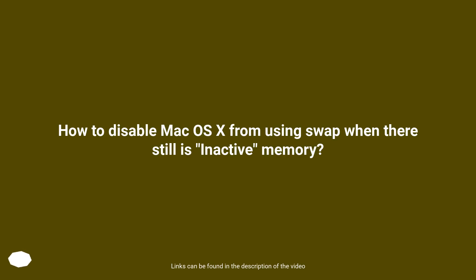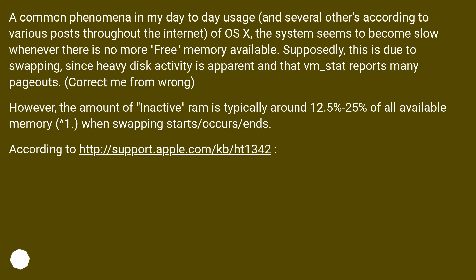How to disable Mac OS X from using swap when there still is inactive memory? A common phenomenon in day-to-day usage, and reported by several others across the internet, is that OS X seems to become slow whenever there is no more free memory available. This appears to be due to swapping, since heavy disk activity is apparent and vm_stat reports many pageouts.